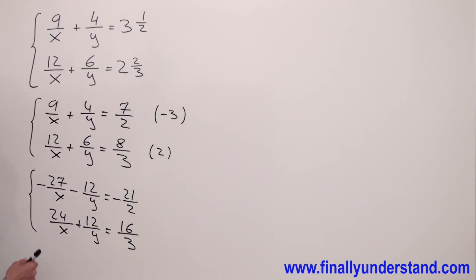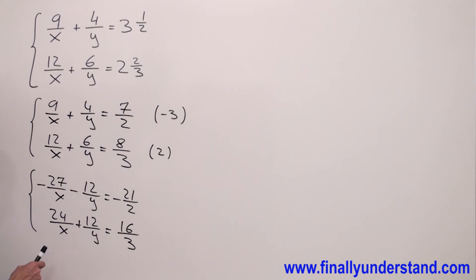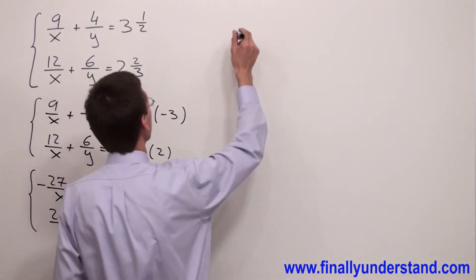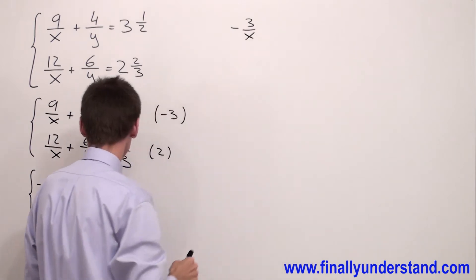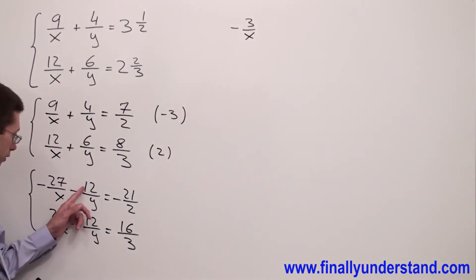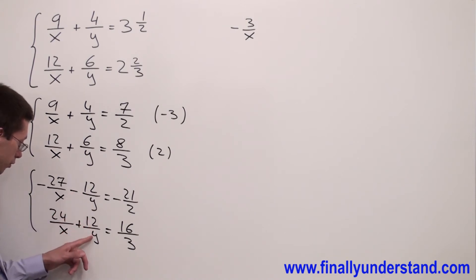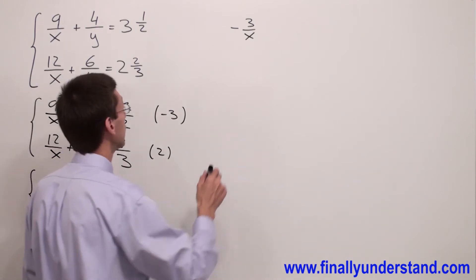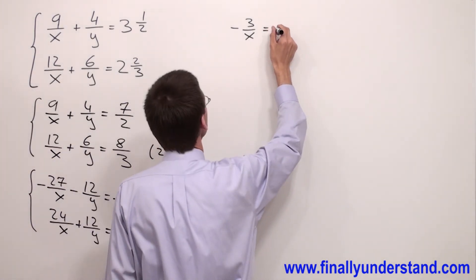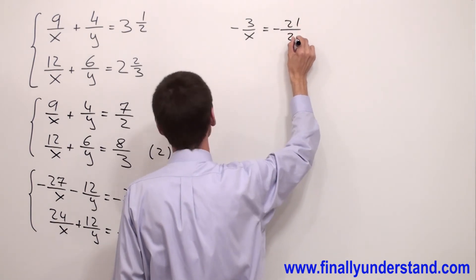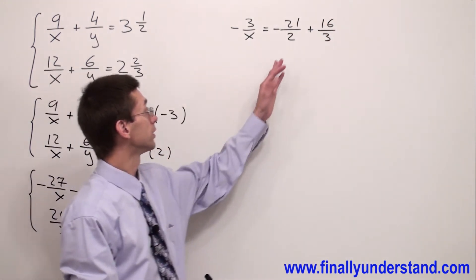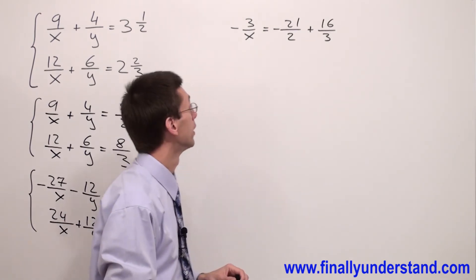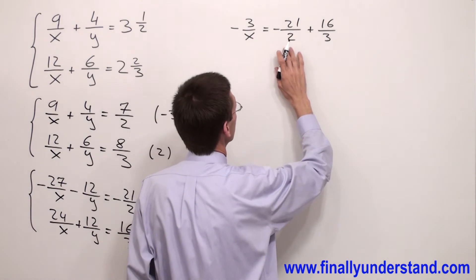Let's perform the addition. I have negative 27 over x plus 24 over x, which equals negative 3 over x. The 12 over y terms cancel each other out. This equals negative 21 over 2 plus 16 over 3. In order to add these two fractions, we need to find the common denominator, which is 6.